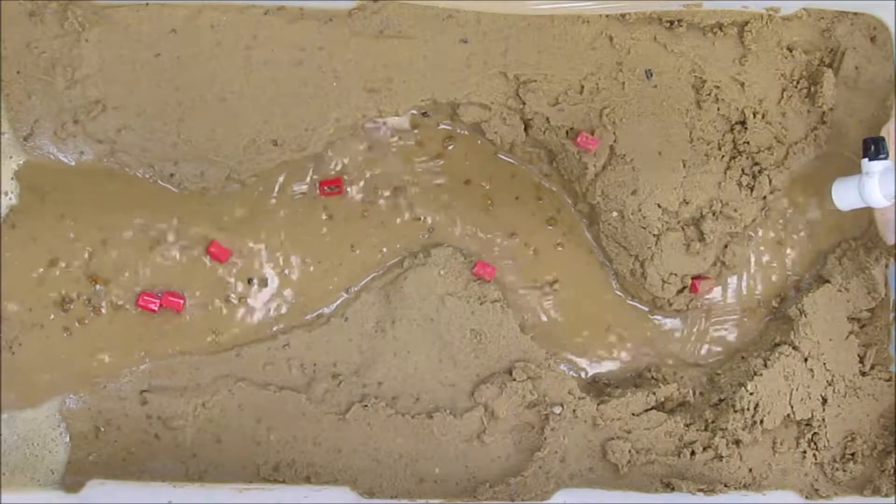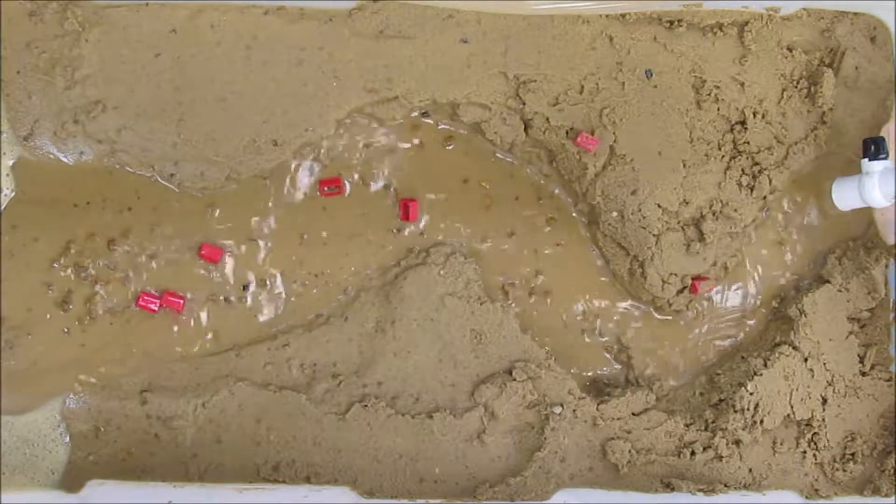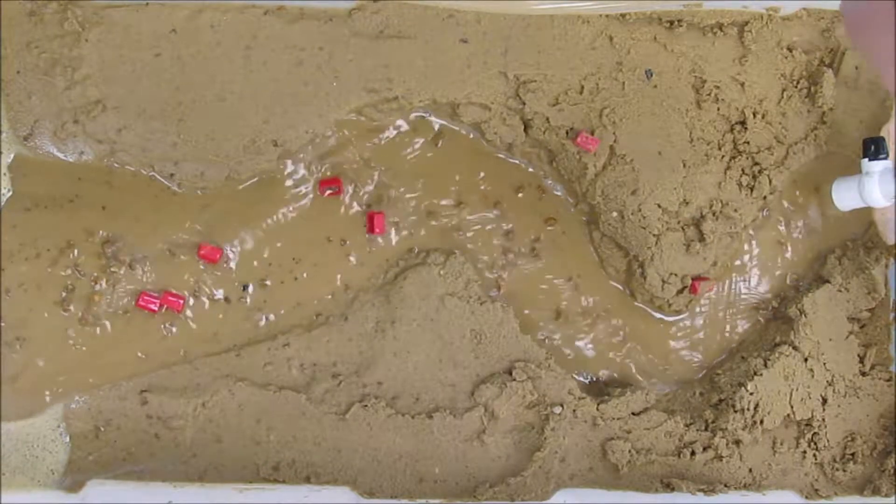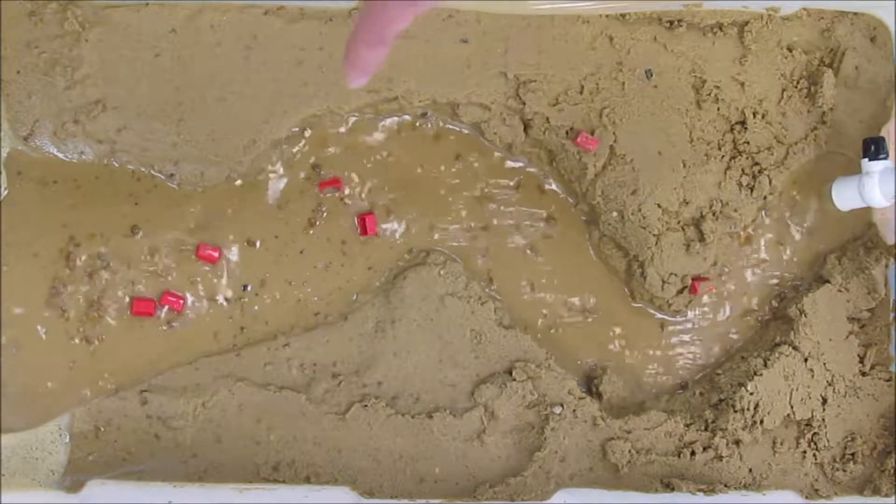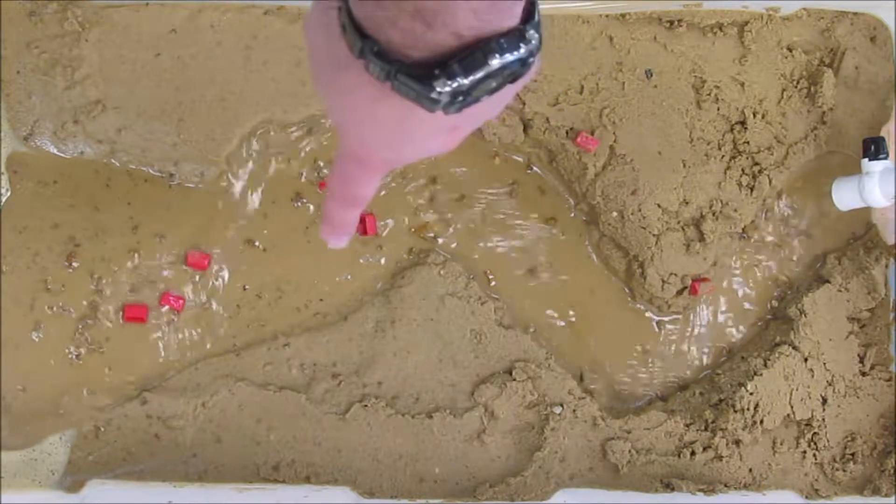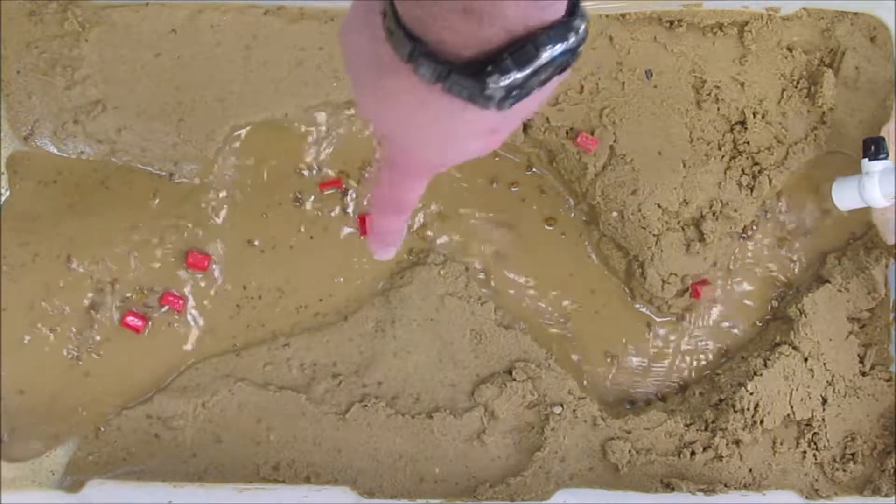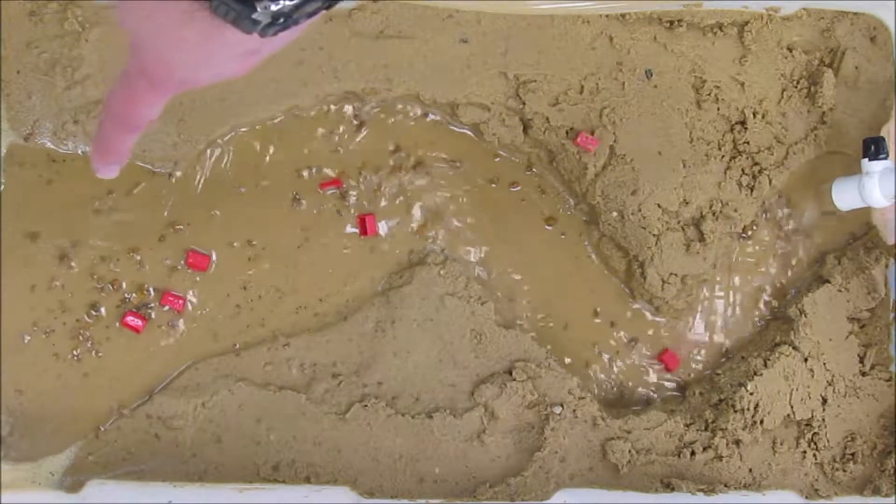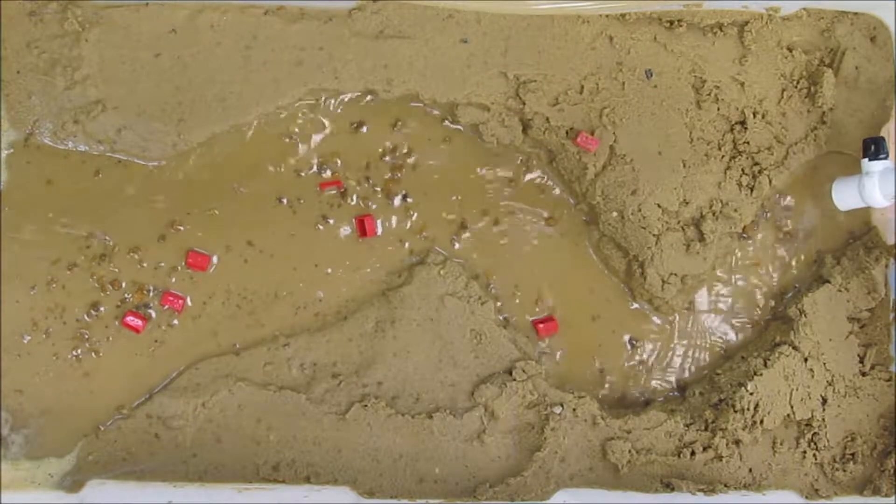The places which have the most erosion are on the outside of each meander. We call that feature the cut bank. Where the water slows down on the inside of the meander, deposition occurs as well as at the end, and we call those places the point bar.